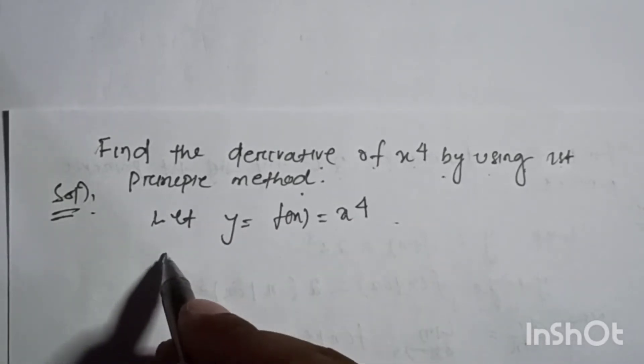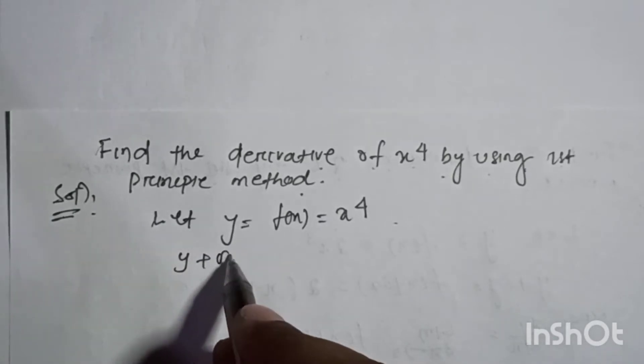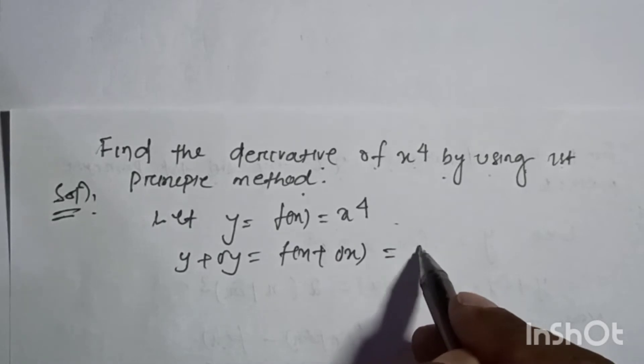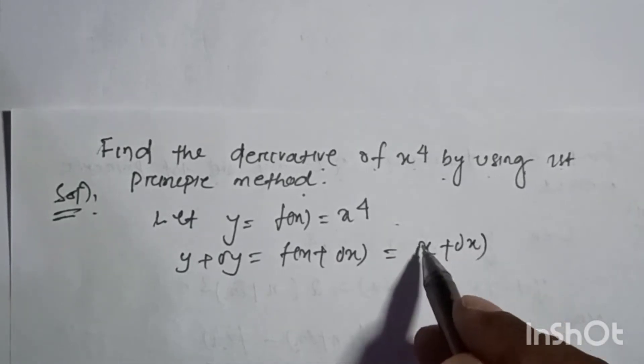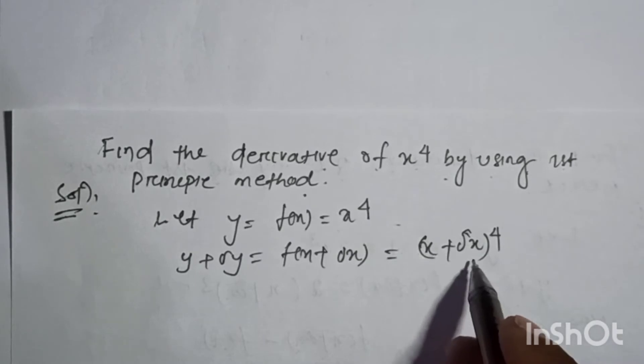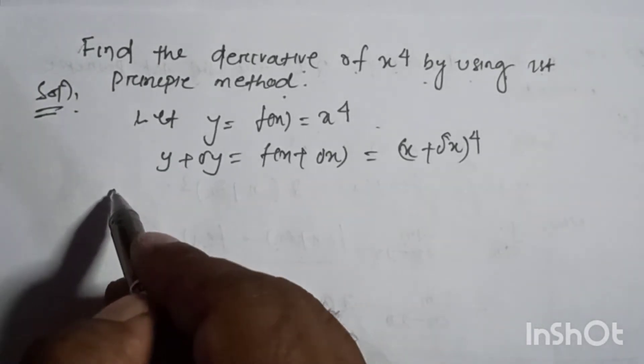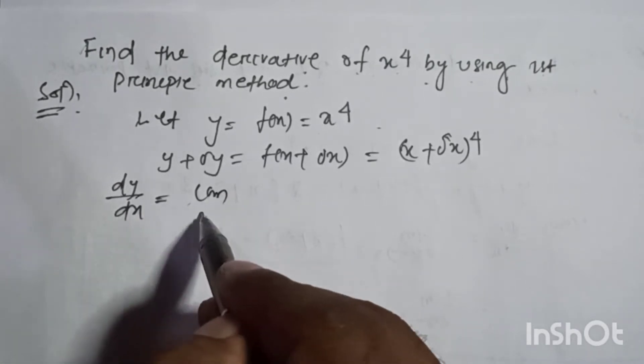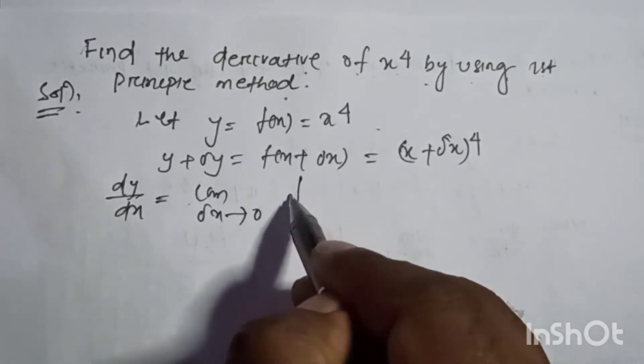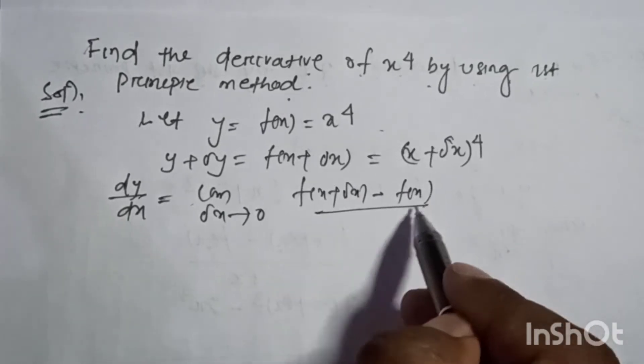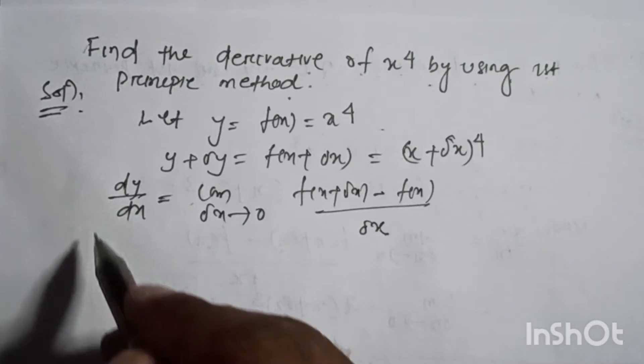Now y plus del y equals f of x plus del x which equals x plus del x to the power 4. That is dy by dx equals limit del x tends to 0, f of x plus del x minus f of x divided by del x.